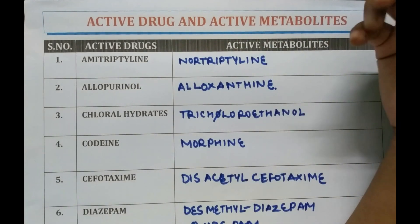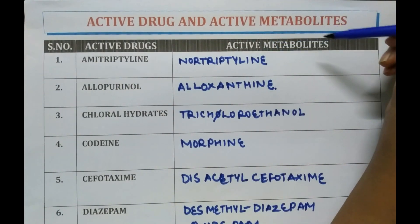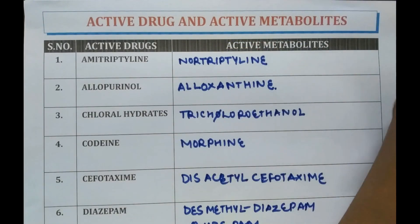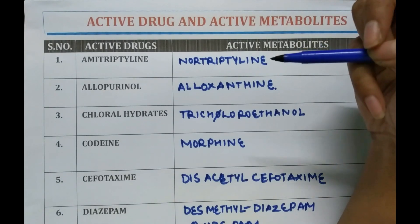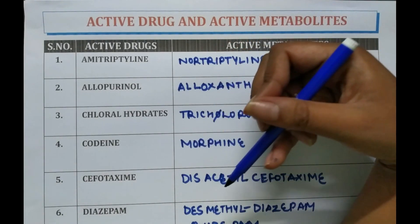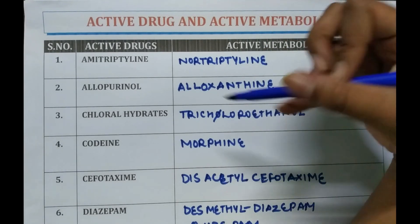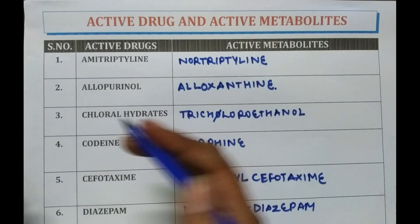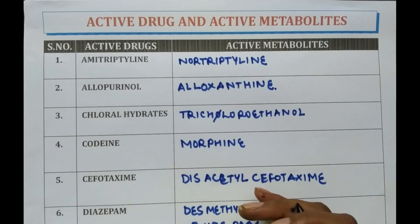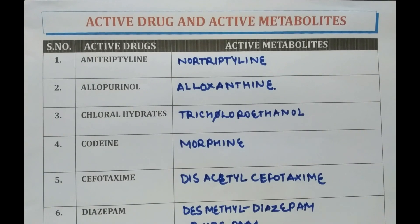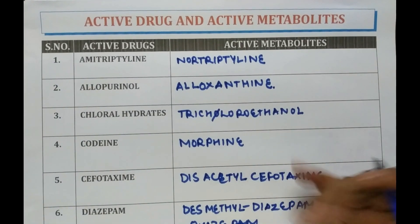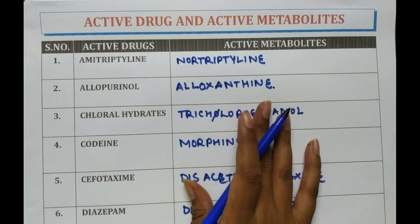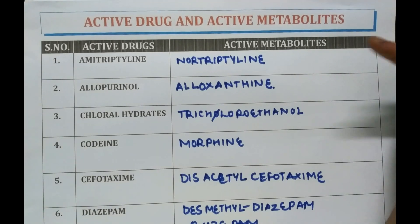To summarize: amitriptyline has its active metabolite nortriptyline; allopurinol converts to alloxanthine; chloral hydrate to trichloroethanol; codeine to morphine; cefotaxime to desacetyl-cefotaxime; diazepam to desmethyl diazepam or oxazepam. These active drugs are converted into active metabolites after their administration, and when their metabolism is done, they show their pharmacological action.